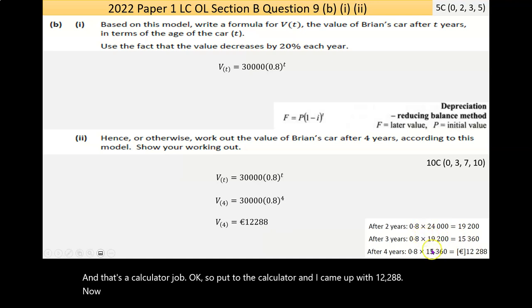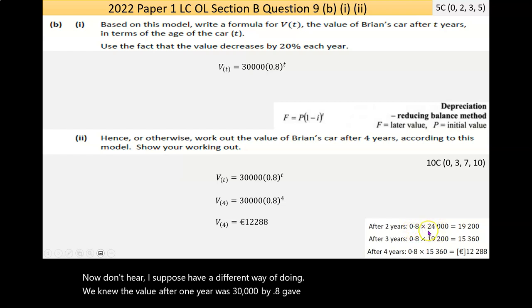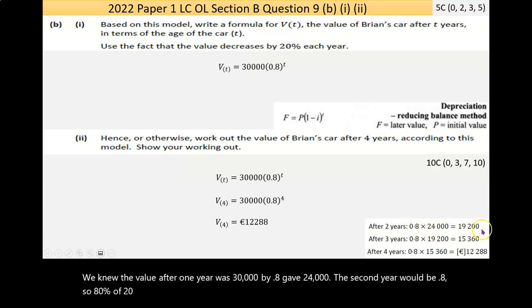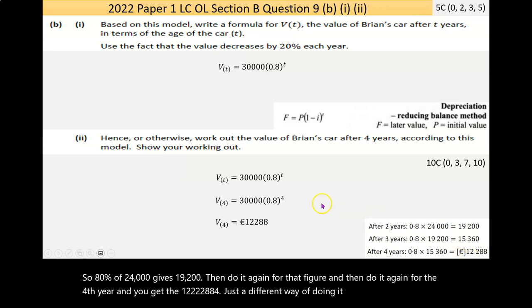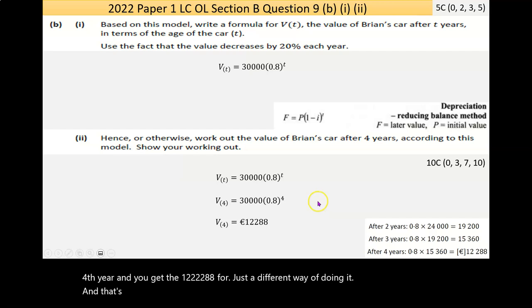Down here, I have a different way of doing it. The value after one year was 30,000 by 0.8, you have 24,000. The second year would be 0.8, so 80% of 24,000 gives 19,200. Then do it again for that figure, and then do it again for the fourth year, and you get the 12,288. Just a different way of doing it. There's no right or wrong. Whatever way it works best for you when you get to the answer is the best way.